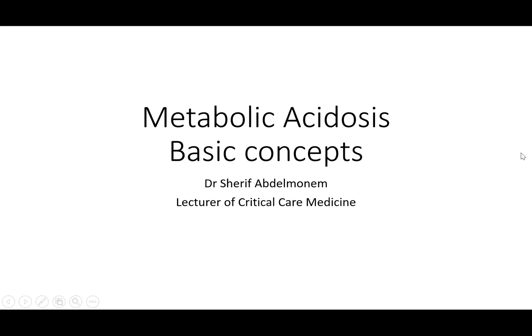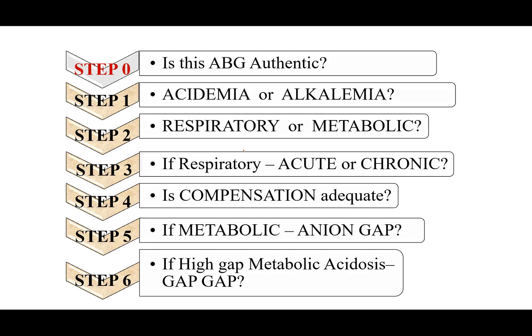This is the second lecture on arterial blood gas. The title is metabolic acidosis: basic concepts. As mentioned in the past session, to interpret the ABG as regards acid-base balance, we have step zero: make sure the ABG is normal.